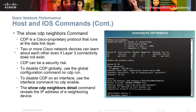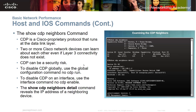The show CDP neighbors command uses a Cisco proprietary protocol that runs at the data link layer. Two or more Cisco network devices can learn about each other even if Layer 3 connectivity does not exist. However, CDP can be a security risk. To disable CDP globally, use the global configuration command no cdp run. To disable CDP on an interface, use the interface command no cdp enable. The show cdp neighbors detail command reveals the IP address of neighboring devices.